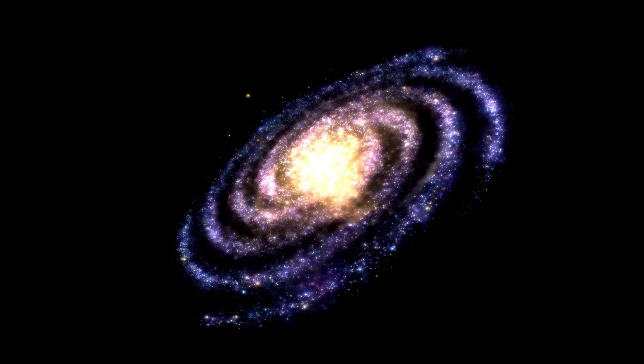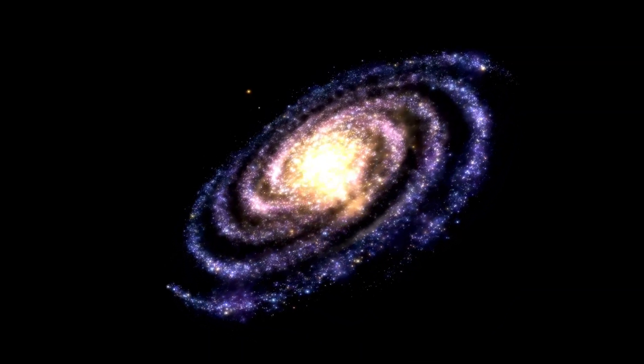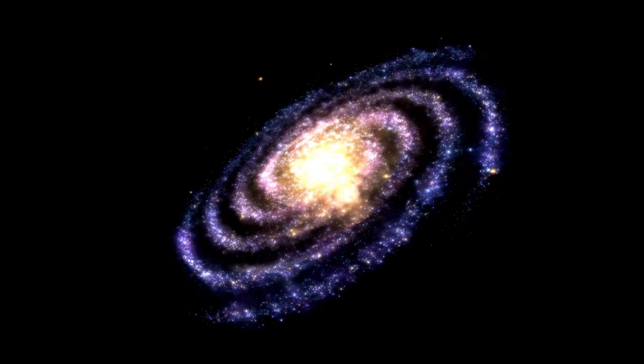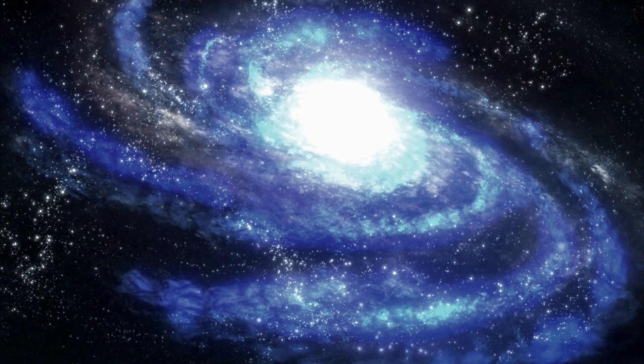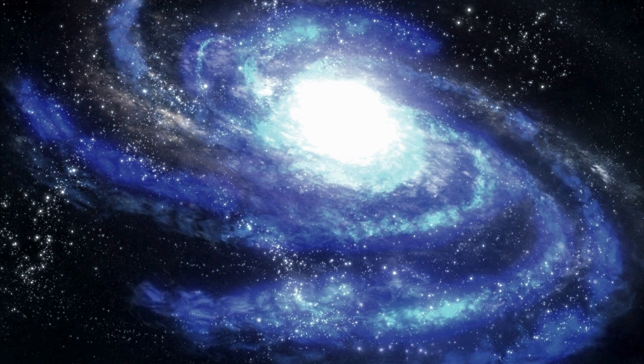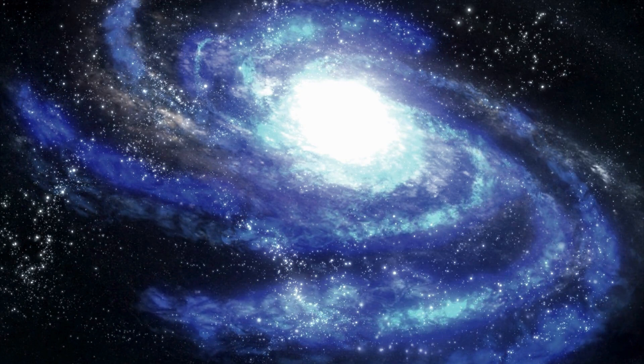But what makes this even more fascinating is that Proxima Centauri, the star it orbits, is a red dwarf. Unlike our Sun, which is relatively stable, red dwarfs are known for their volatile nature, often emitting powerful solar flares that can drastically affect the planets orbiting them.